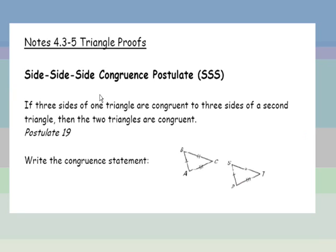Our first method of proving a triangle is congruent is the side-side-side congruence postulate. In side-side-side congruence, if three sides of one triangle are congruent to three sides of a second triangle, then the two triangles are congruent.